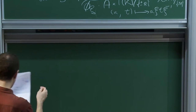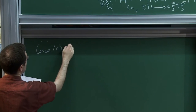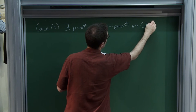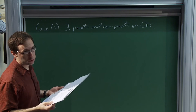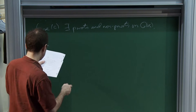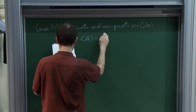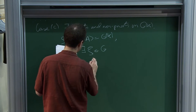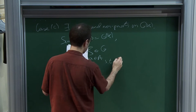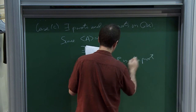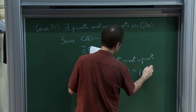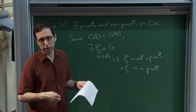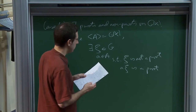The induction case is what happens when there exist pivots and non-pivots in G. As I said last time, in order to do induction, you don't really need an ordering — you just need generation. Because A generates G(K), there is going to be some non-pivots in G and some A in A, such that Xi is not a pivot, but A·Xi is a pivot.